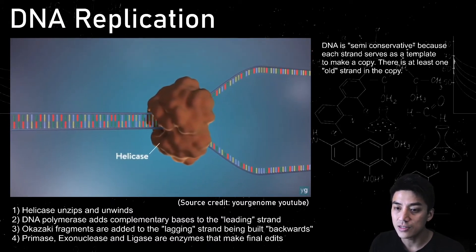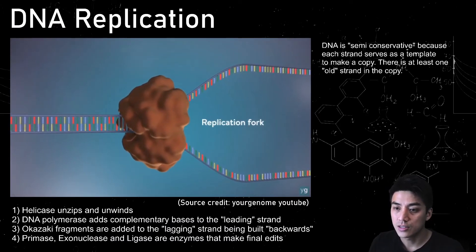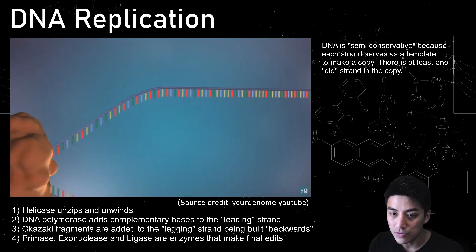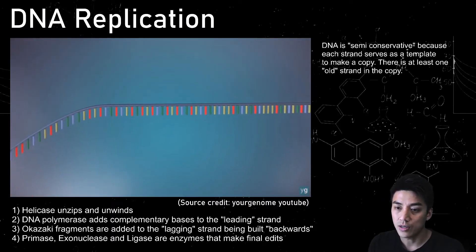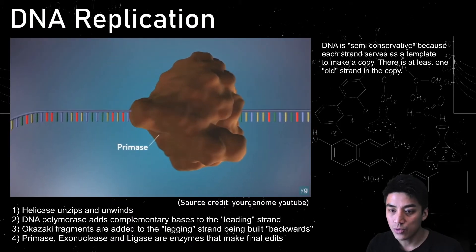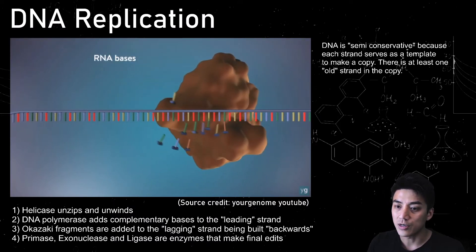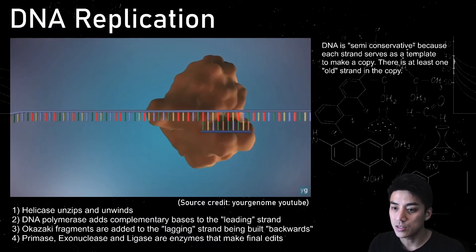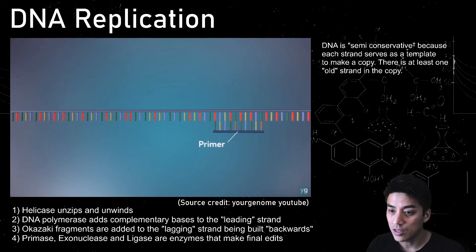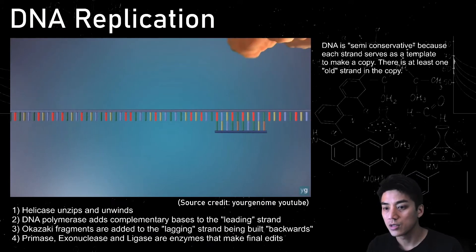So first things first, helicase is an enzyme that comes in and it unzips and unwinds DNA. So it tears it apart. There's something called a replication fork, which is where it starts to separate. So up here you have primase, which is another enzyme, and it's almost like a brick layer. It starts pairing up these nitrogenous bases, these nucleotides, and it just sets in something known as a primer. It's like this is where we're going to start replicating.